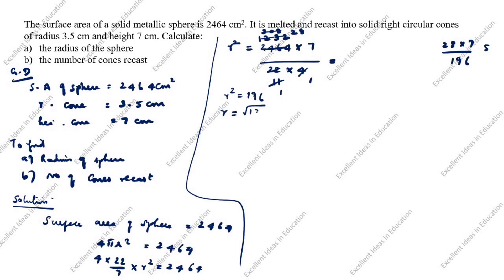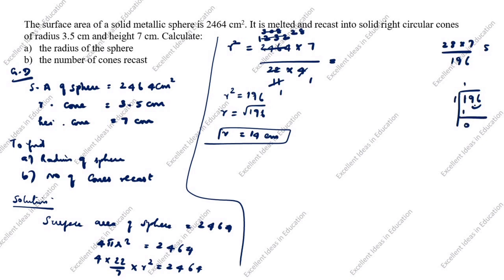So r² = 196, therefore r = √196 = 14 centimeter. We verify using the square root method for 196, taking digit pairs: 14 × 14 = 196. So the radius of the sphere is 14 centimeter.